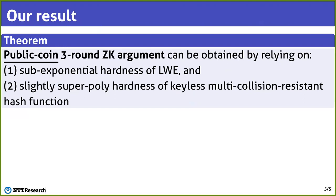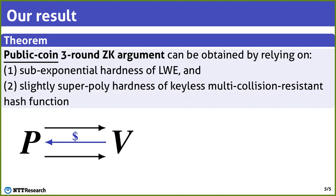Given this result of Bitansky et al., in this work, we show that a public coin 3-round zero-knowledge argument can be obtained from almost the same assumptions. In particular, we obtained it from sub-exponential hardness of the learning with errors assumption and slightly super-polynomial hardness of keyless multi-collision resistant hash functions. Recall that in a public coin zero-knowledge argument, the verifier only sends the outcome of coin tosses to the prover, and it computes the final output from the transcript deterministically. Many well-known zero-knowledge protocols, such as GMW and BRAM, are public coin, and so a public coin 3-round zero-knowledge protocol is a theoretically very natural target, and our result gives a positive answer about it.